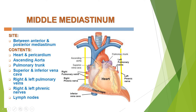Middle Mediastinum is located between anterior and posterior mediastinum. Its contents, as seen in the diagram bounded by yellow lines: heart, pericardium surrounding the heart, ascending aorta, pulmonary trunk, lower half of the superior vena cava, inferior vena cava entering the right atrium, four pulmonary veins, right and left phrenic nerves, vagus nerve, pericardial vessels, phrenic vessels, and tracheobronchial lymph nodes.